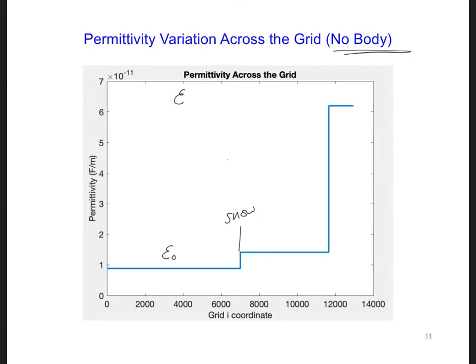Then it increases slightly since the relative permittivity is 1.6 for the snow. And then it increases again here for the ground.